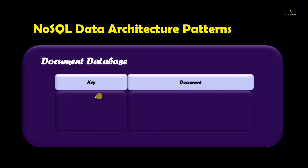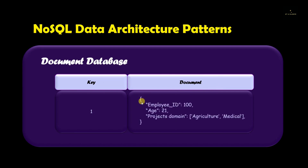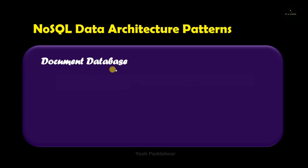To understand this clearly, let's see an example. The data is stored in two parts. First is a unique key — let's say it is '1' in this case — and second is the document. As mentioned, the document can be of any complex data structure; here we have used JSON. You can see that the data is stored in the form of key-value pairs inside curly braces. We have stored the information of an employee: the first field is the employee ID, the second is the age, and the third is the project domain. The project domain's value is in the form of an array containing two elements, showing that the value can be of any complex data structure.